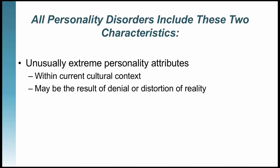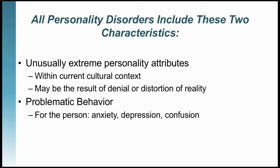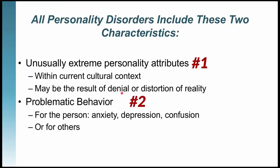The second core characteristic is that these extreme attributes cause problems — either for that person, increasing their anxiety, depression, or confusion in relating to others, or they create problems for others who have to interact with that person daily. So the two universal characteristics are: unusually extreme personality attributes, and problematic behavior that creates problems for the individual or for others.